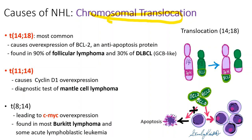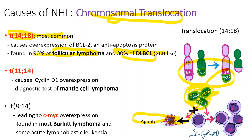Chromosomal translocation between 14 and 18 is the most common, found in 90% of follicular lymphoma and 30% of diffuse large B cell lymphoma. This activates BCL-2, which blocks apoptosis, thereby inducing cell proliferation. Translocation 11;14 is characteristic for mantle cell lymphoma. c-MYC, caused by translocation 8;14, is characteristic and found in most Burkitt lymphoma and some acute lymphoblastic leukemia.